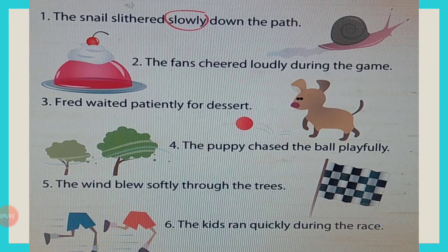Now let's practice. You will read the sentences with me. First, we will find out the verbs in each sentence. After that, you will point out the adverbs. The first sentence has been done for you: The snail slithered slowly down the path. Here, snail is a noun. What did the snail do? It slithered. Slithered is an action. And how did it slither? Slowly. Slowly is telling us how the action happened.